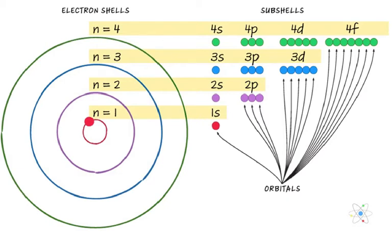Albert Einstein and other scientists in the late 1800s and early 1900s discovered that atomic energy levels are quantized. These energy levels are energy values that an electron in an atom can have or occupy. The lowest energy state or energy level is called the ground state.